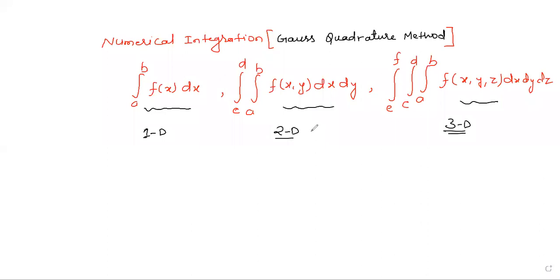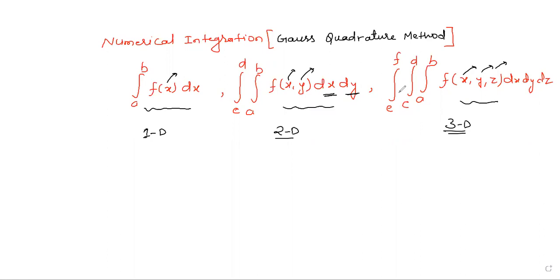We will discuss how to solve these types of integration using the Gauss Quadrature method for one-dimensional, two-dimensional, and three-dimensional problems. One-dimensional means we will have a single limit; two-dimensional will have double limits a to b and c to d, and the function depends on both x and y. We will go for the Gauss Quadrature method to handle all these.